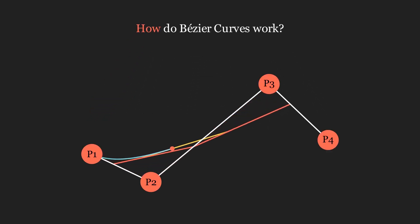Alright, the big question. How do Bezier curves work? They're essentially just a bunch of linear interpolations put together.